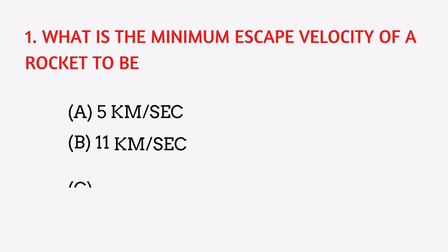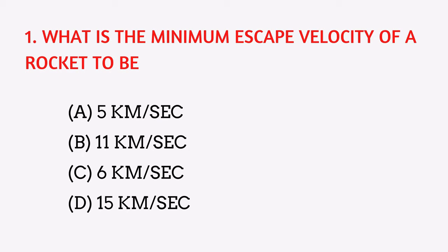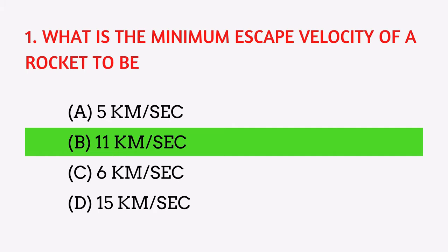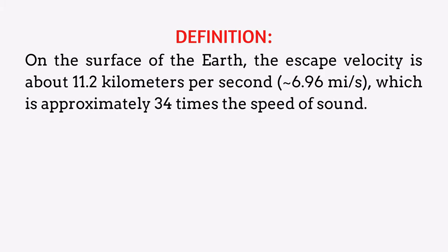What is the minimum escape velocity of a rocket? The answer is 11 kilometers per second. On the surface of the earth, the escape velocity is about 11.2 kilometers per second, which is approximately 34 times the speed of sound.